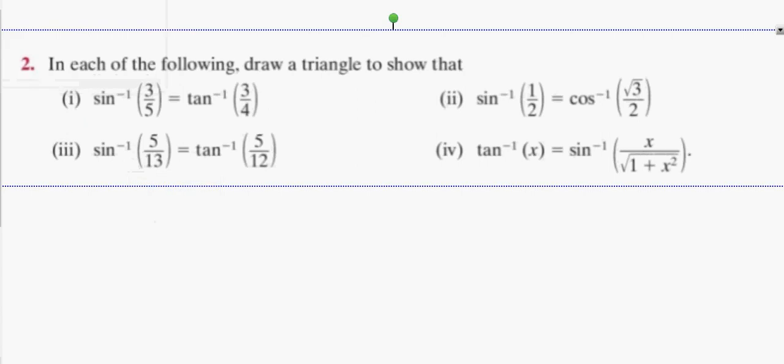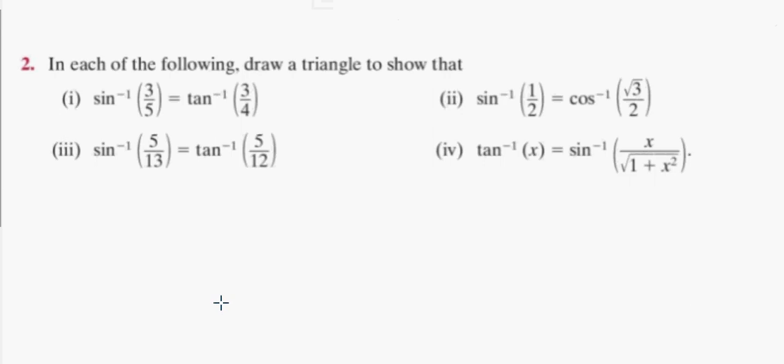Alright guys, in each of the following draw a triangle to show that sine inverse 3 over 5 is the same as tan inverse 3 over 4. So it's very easy, right? Sine is what guys? Opposite over hypotenuse.